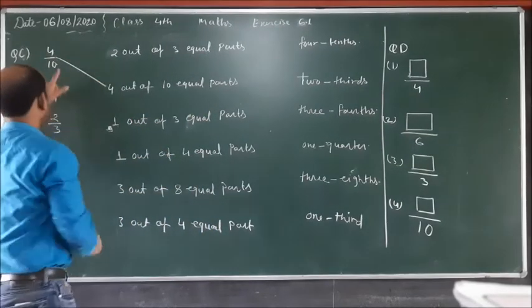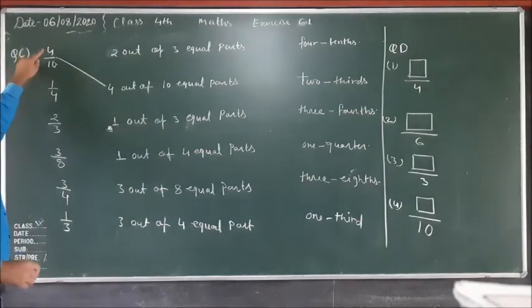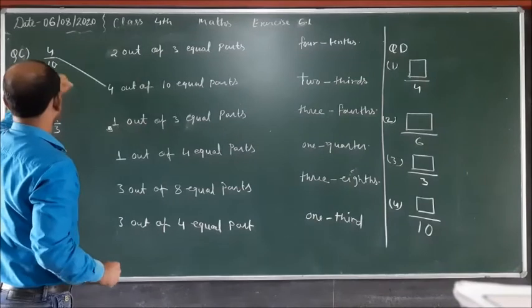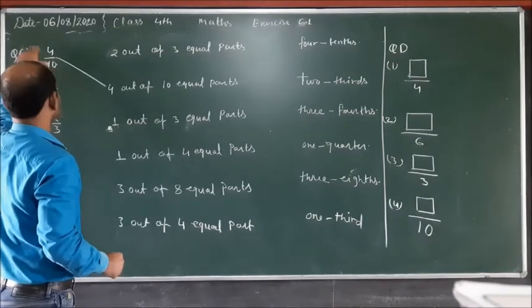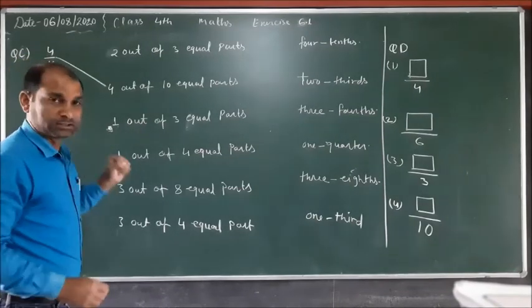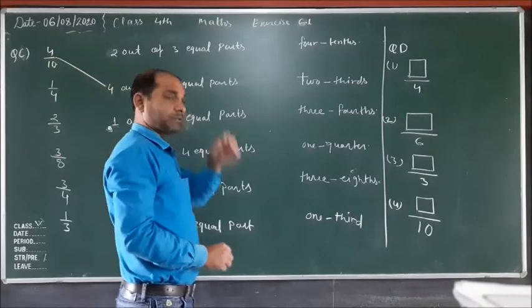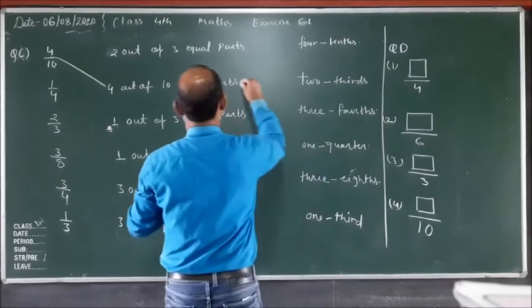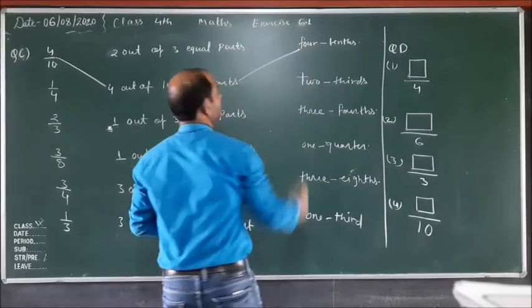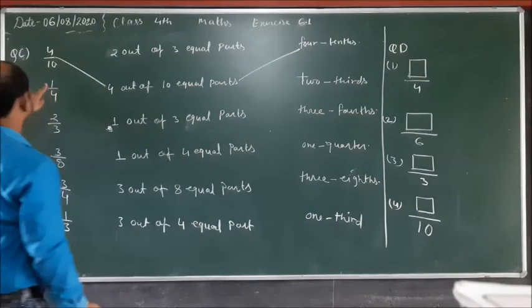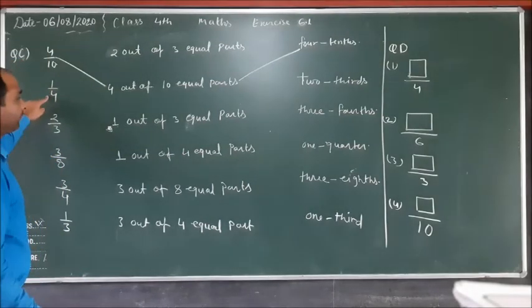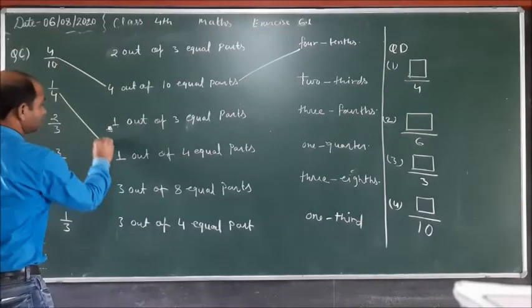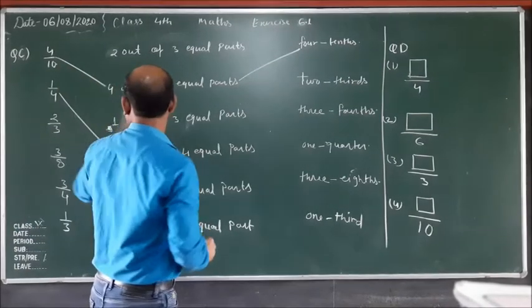We read four upon ten as 'four-tenths.' Next is one upon four — one out of four equal parts. One upon four can also be called one quarter.